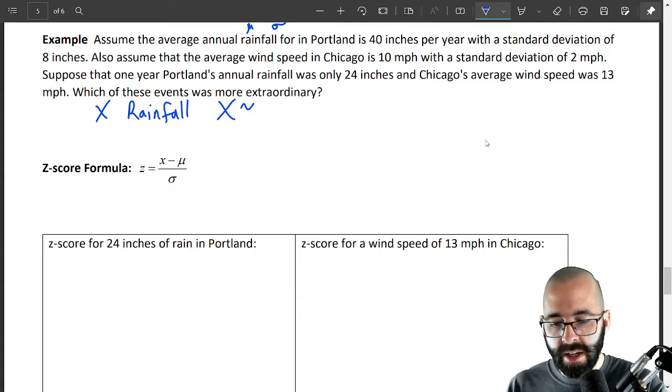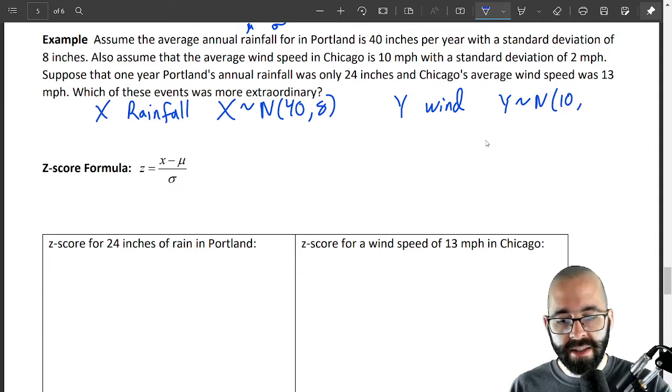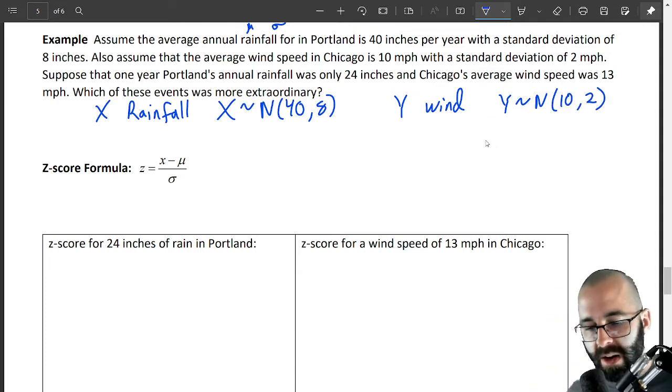So let's do each one of these. Let's say X is the rainfall, just like before. X is normally distributed with an average rainfall of 40 inches, standard deviation of 8. Let's say Y is the wind speed in Chicago. Well then Y is also normally distributed, the average wind speed was 10 miles an hour with standard deviation 2 miles an hour.